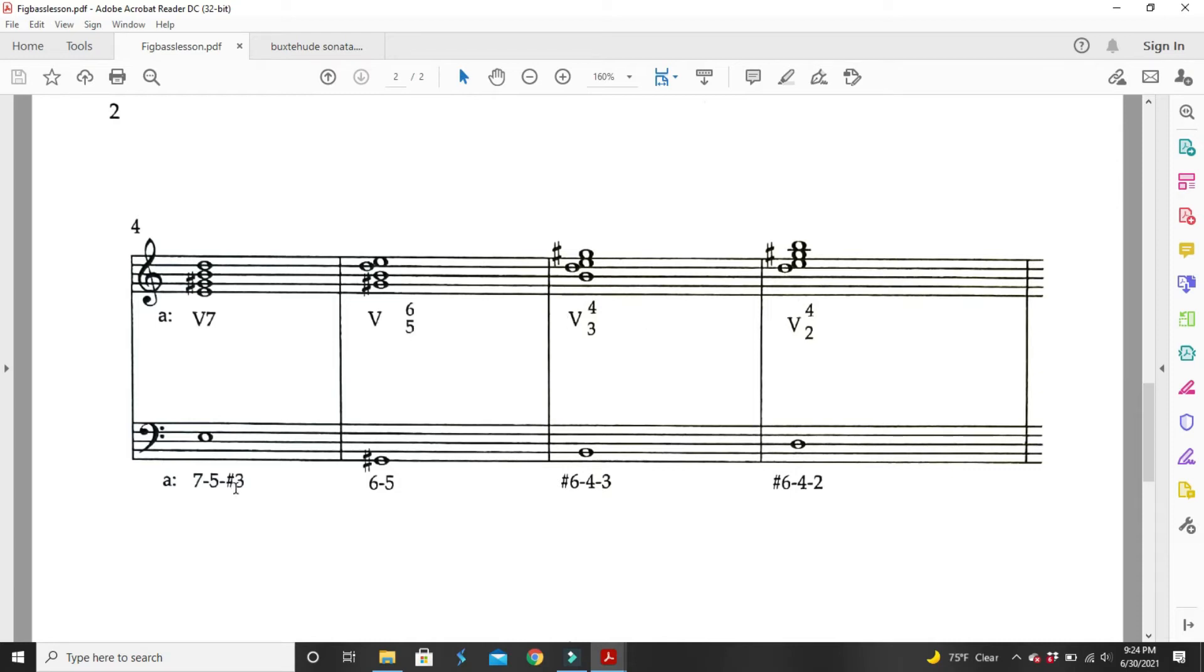Now, in figured bass, this is what we're going to see. We're going to see a 57 sharp 3. Wherever the sharp appears, like over here, we see the sharp in front of the six. That tells us that it's the interval of a sixth that we raise.